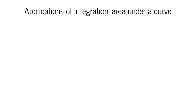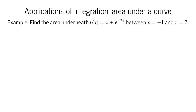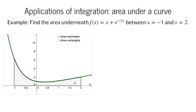One of the classical applications of integration is using it to determine the area underneath the graph of a function, often referred to as finding the area under a curve. For example, let's say we wanted to find the area underneath the graph of the function f equals x plus e to the negative 2x between the values x equals negative 1 and x equals 2. The area we want to determine is the shaded region in this graph.